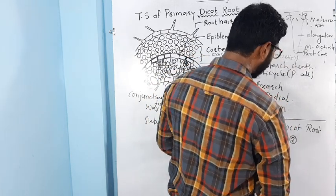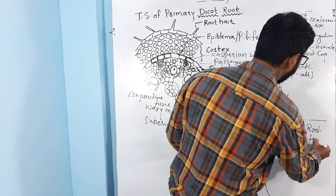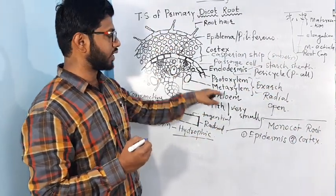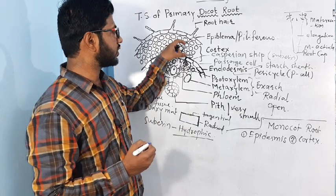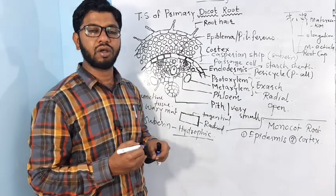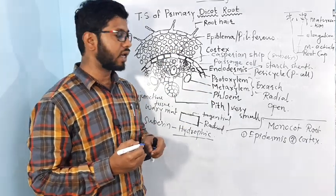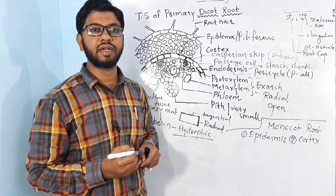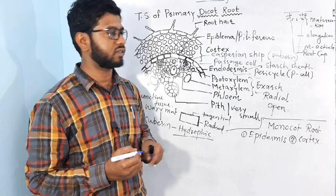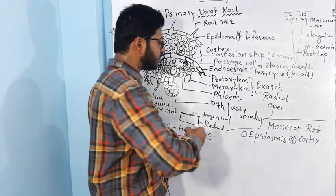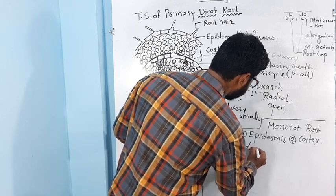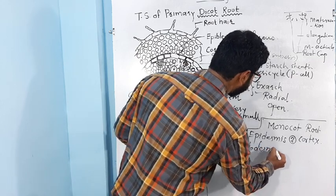Just below the epidermis, cortex is present, similar to dicot root cortex. The cortex consists of circular, loosely arranged parenchyma cells with abundant intercellular spaces to transport water. Endodermis is also present, and the cells of endodermis